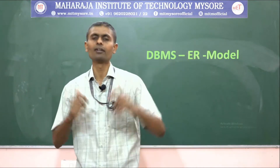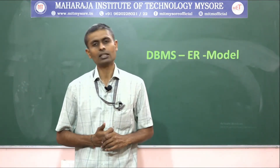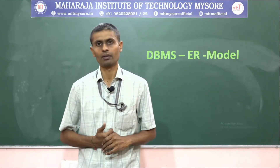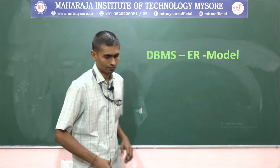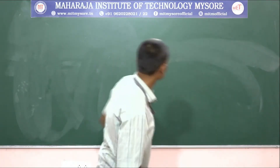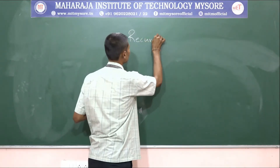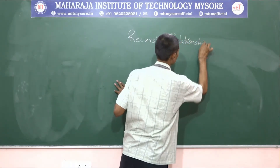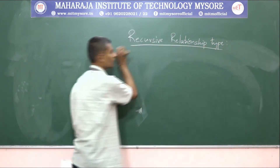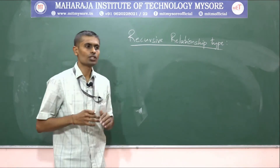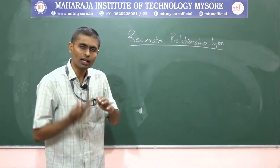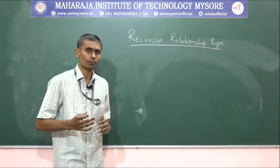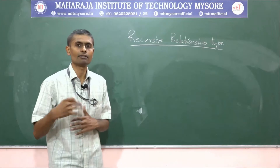That is what we covered with respect to entity type and relationship type. In today's session, I am covering one more very interesting topic of the ER model — the recursive relationship type. Recursive relationship type means the same entity type participates more than once in a relationship type, and such a relationship type we call by the name recursive relationship type.